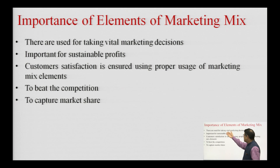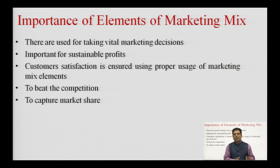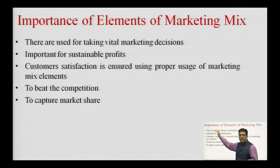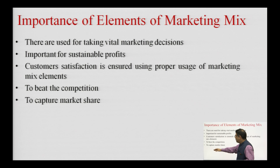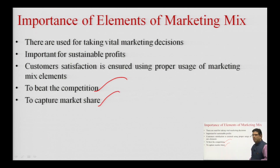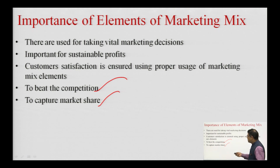The importance of marketing mix elements: they are used for taking vital marketing decisions. You have to take decisions related to pricing, packaging, the product offering, what discounts to give, and how to advertise. These decisions are important for sustainable profits — if you take the correct decisions, profits go up; if wrong decisions are taken, profits go down. For example, Jio offered low prices with better service and beat the competition. If you offer a better product for a lower price, your market share is likely to increase.